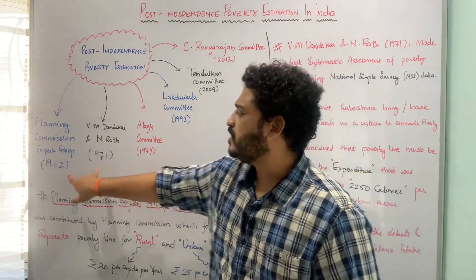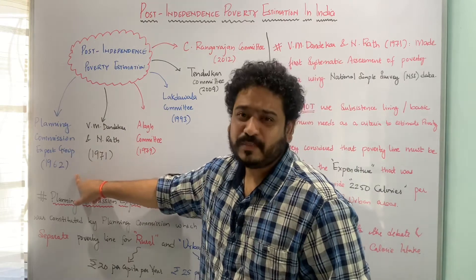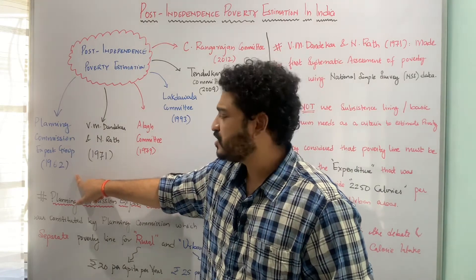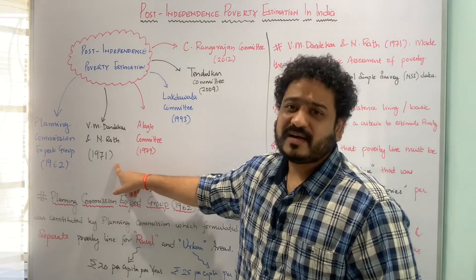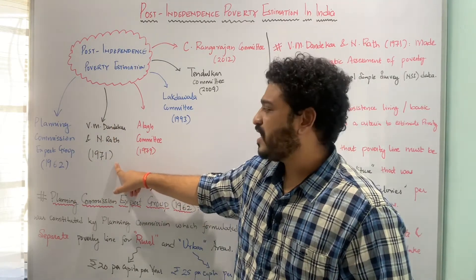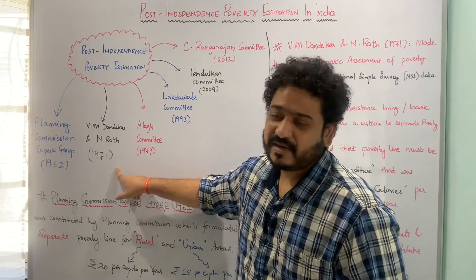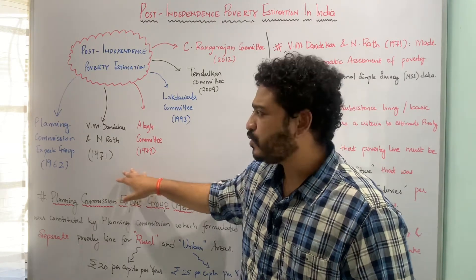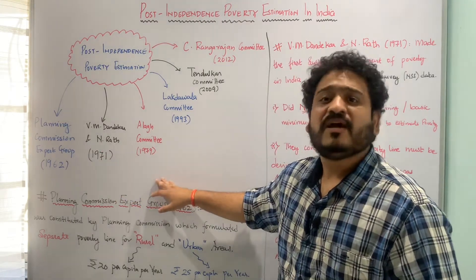Today, I will be talking about two of these: the Planning Commission's expert group in 1962, and then V. M. Dandekar and N. Rath's idea of poverty in 1971. So let us look at what the Planning Commission's expert group has for us.